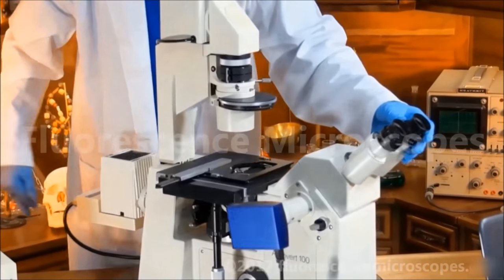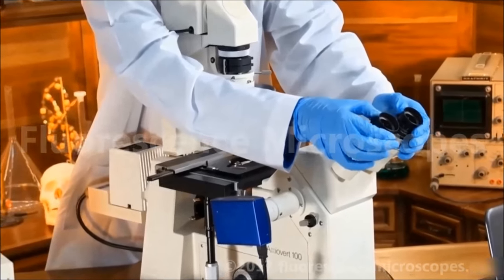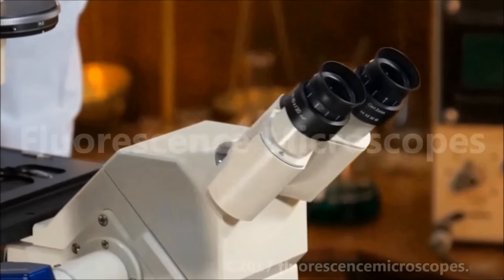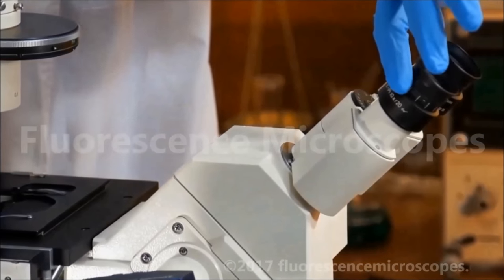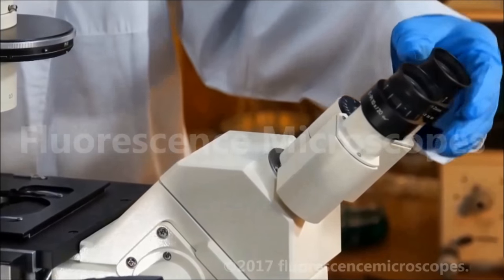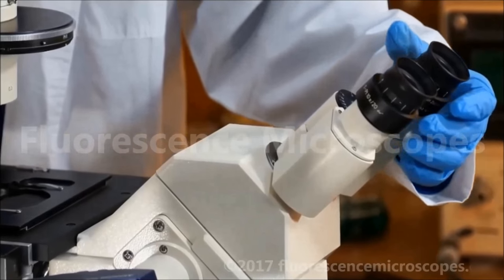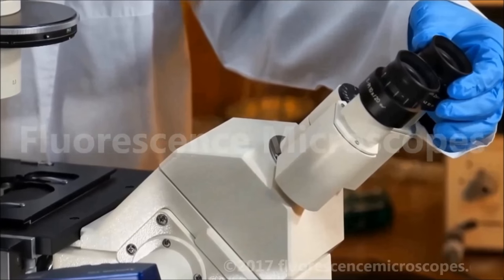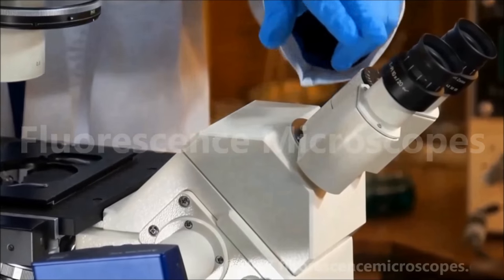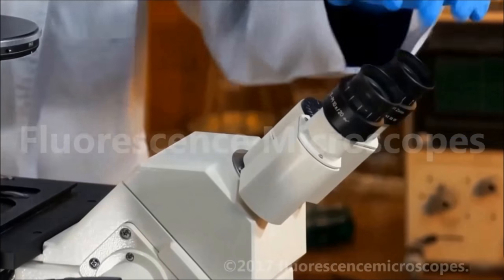You have diopters on the eyepieces, both eyepieces. This is to synchronize both eyepieces so that they're in focus at the same time. Each person has a little different setting, especially if you wear eyeglasses, so you may need to adjust it a little differently. But if you look into the eyepieces and one of them is in focus and one is not, just use the diopter on one or both.